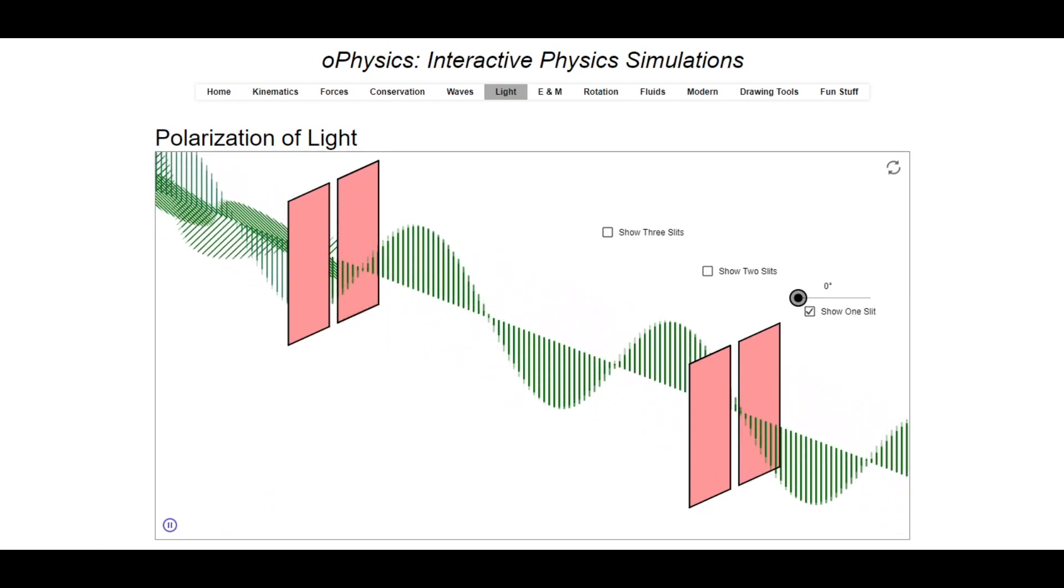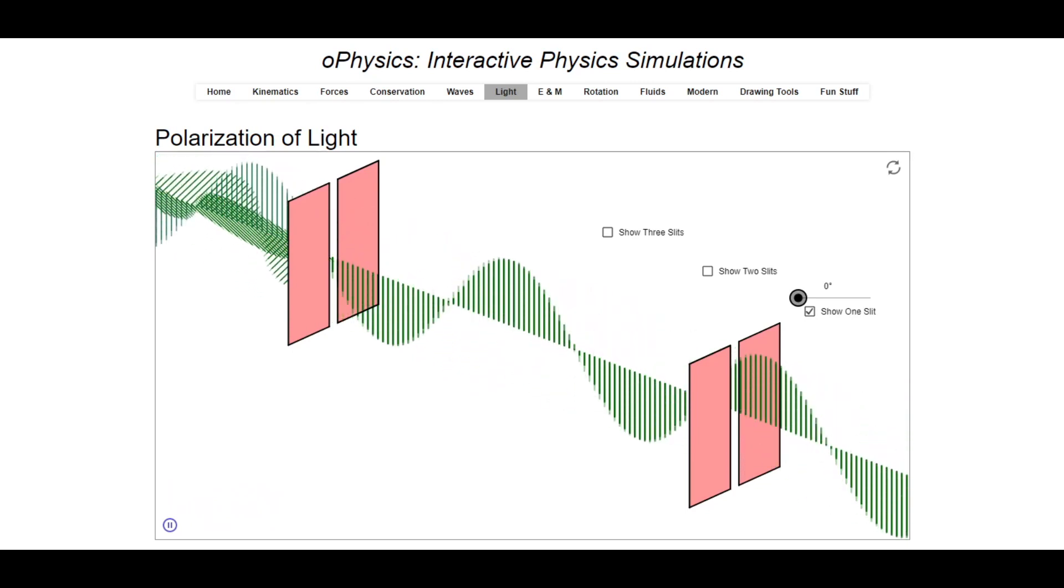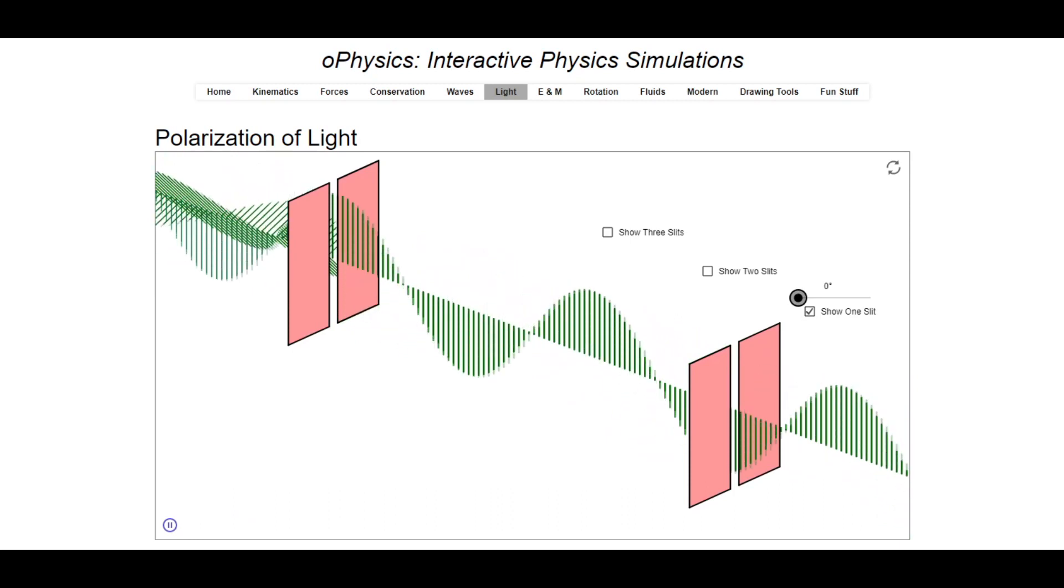The linearly polarized light then comes into contact with another linear polarizer. If that linear polarizer is aligned with the first one like the scenario here, the light passes completely through.